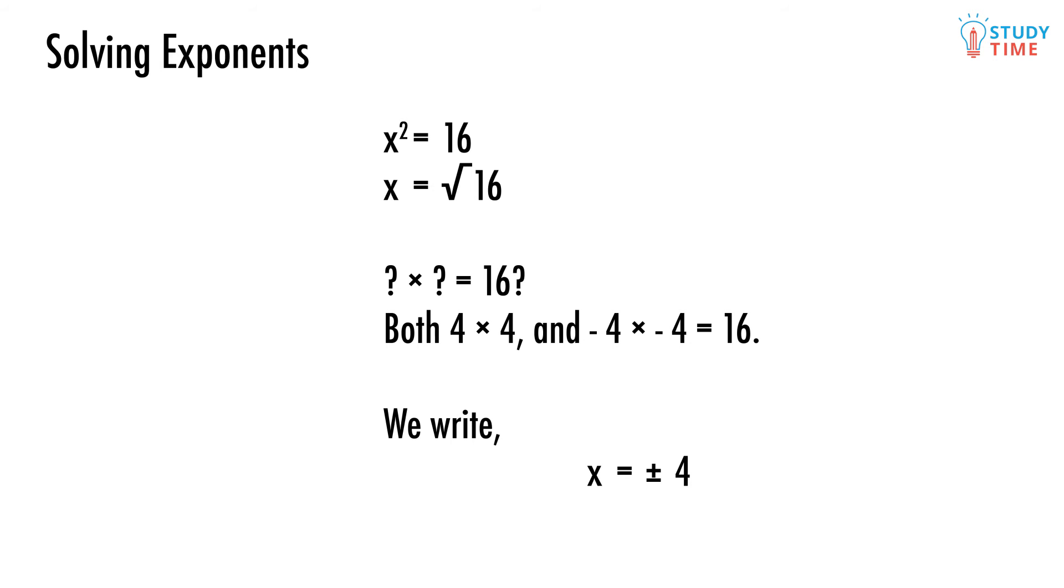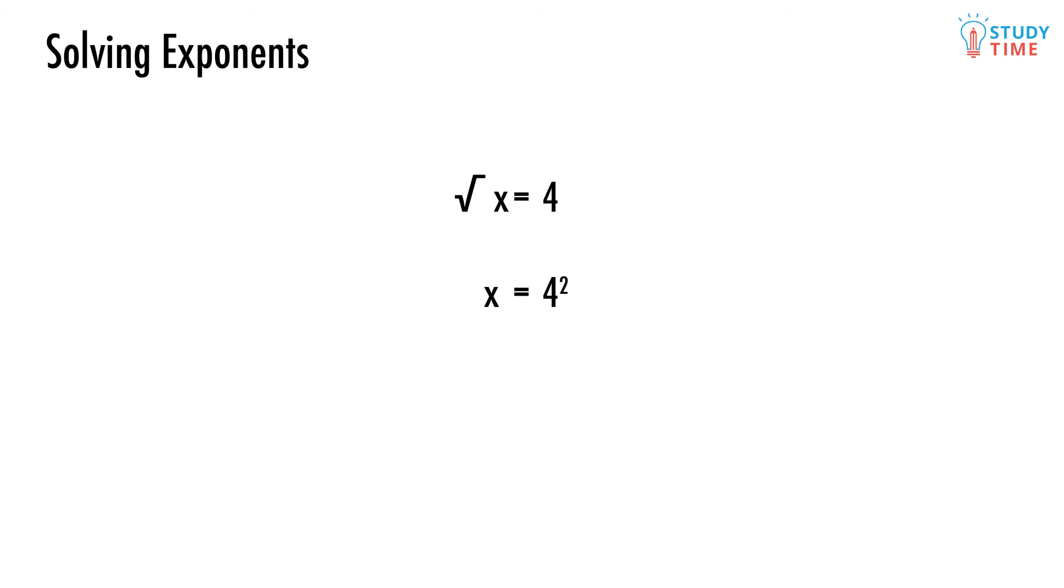It's important to realize that in this case with the square root, there are two values for x. The other way around is a lot easier. Say we've got the square root of x equals 4. How do we undo that square root? By squaring both sides, of course. So x equals 4 squared. And what is 4 squared equal? 4 squared equals 4 times 4 equals 16. Positive all the way.